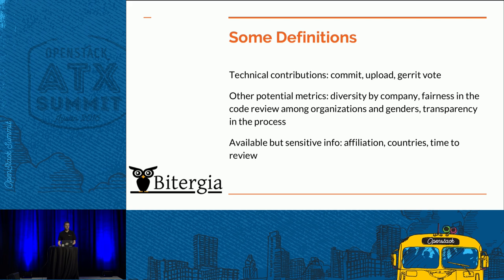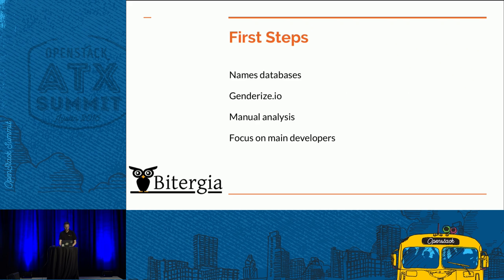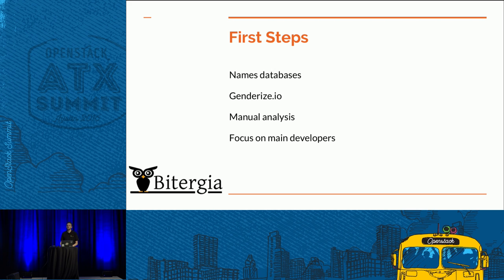When I started with this, I found an API named genderize.io — you give it a name and it returns a probability of being male or female. We're talking about 10,000 different identities found in Git and Gerrit. Those needed some manual analysis on top of this. I also focused on main developers — I don't have 100% of the population.